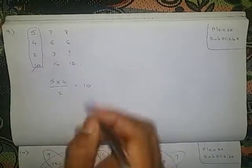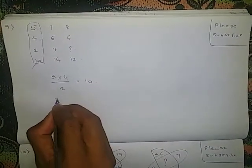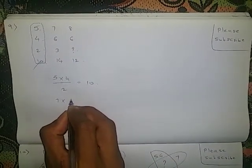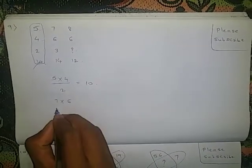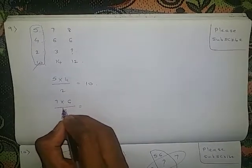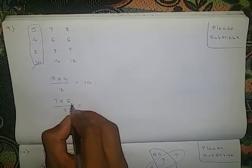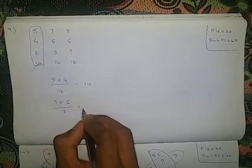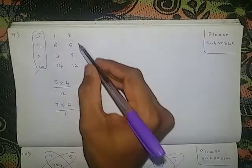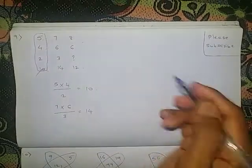Let us check for this also. First number 7 into second number 6, divided by third number 3. 7 sixes are 42. 42 by 3 is 14. The same logic will apply here also.